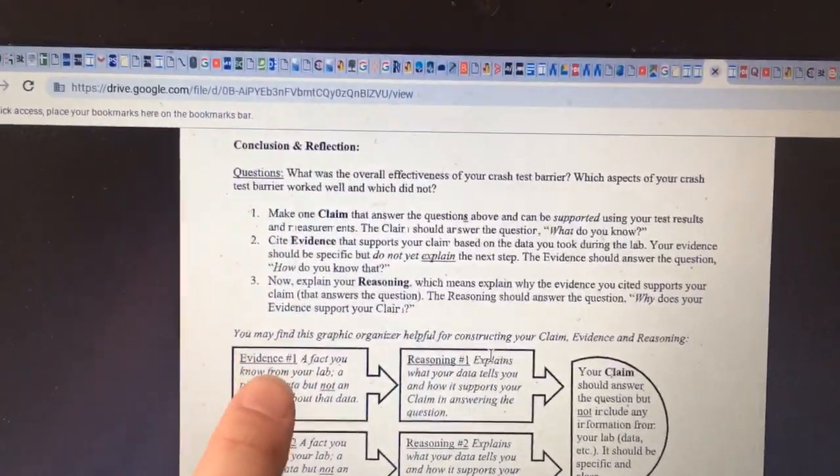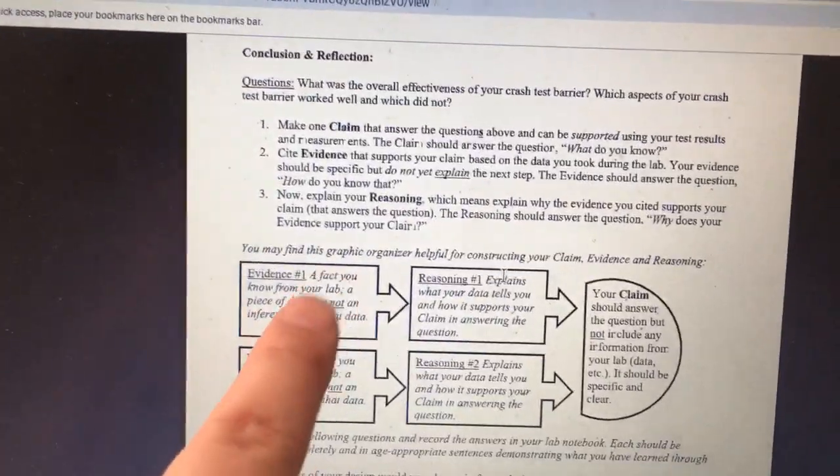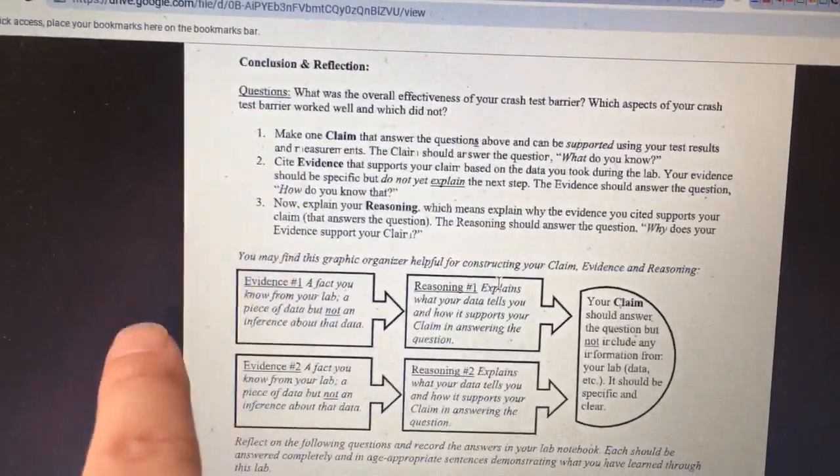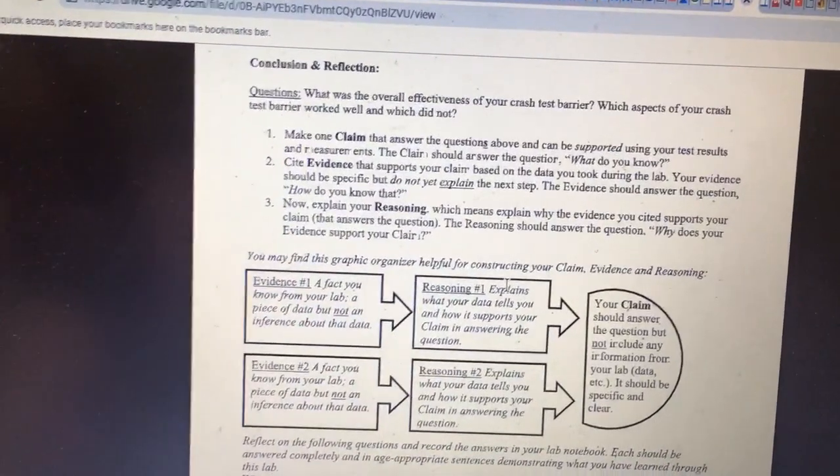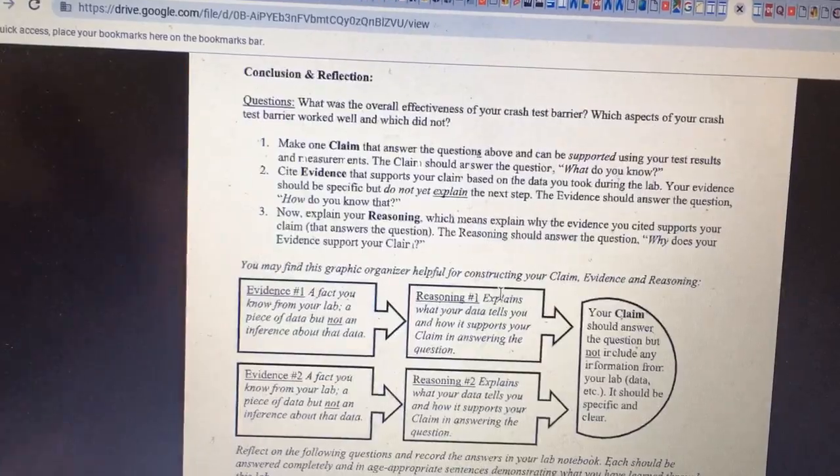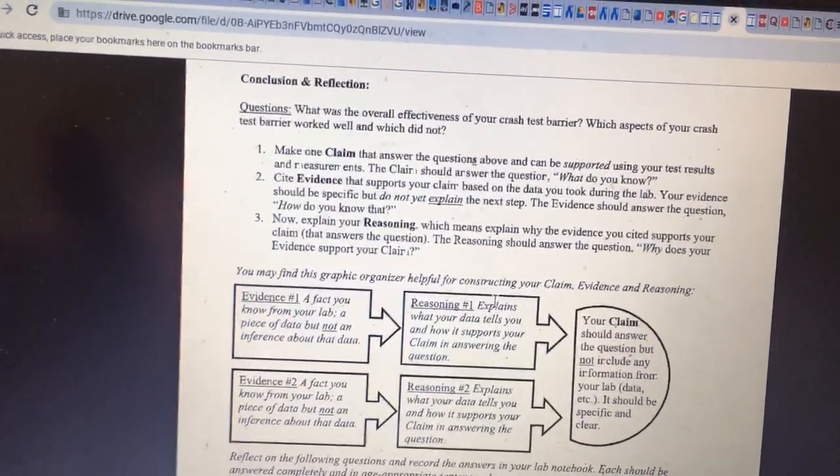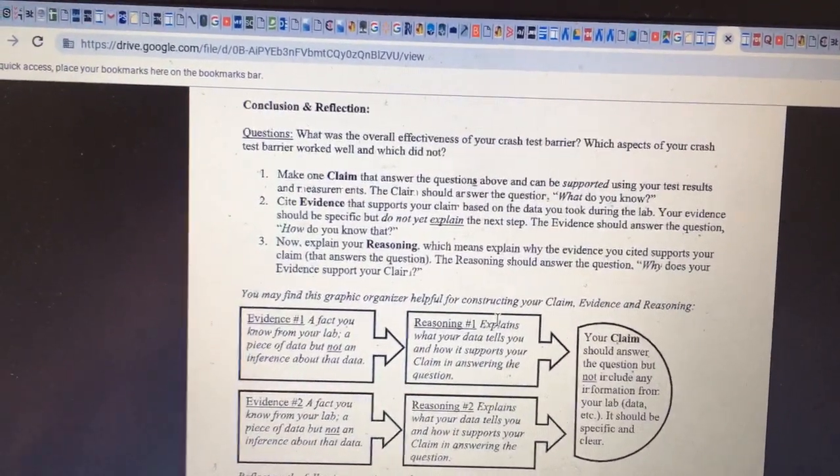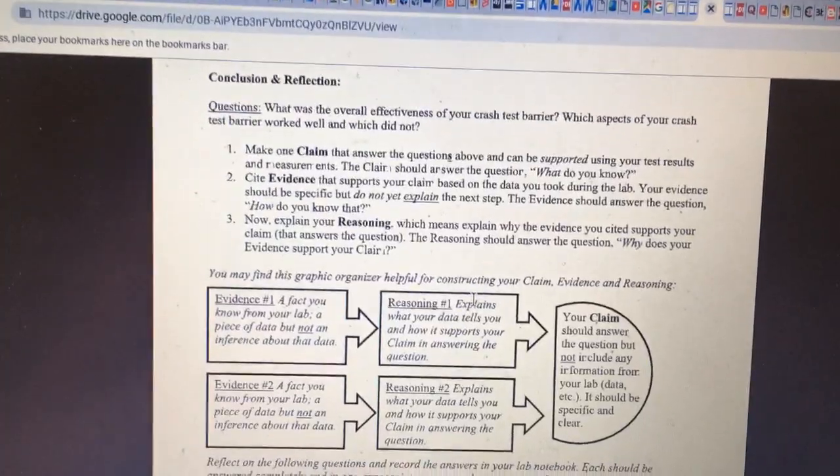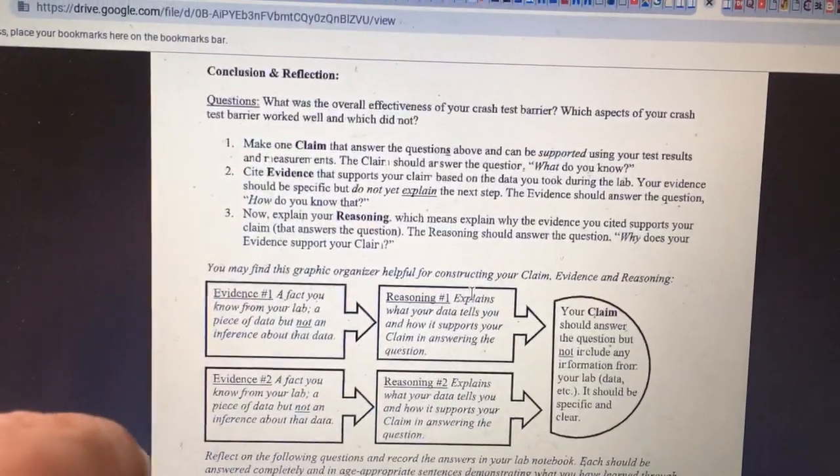So it goes like this: evidence, reasoning, claim. I'll give you an example from a lab that we did last semester. Last semester we did a penny drop lab where we dropped one penny, three pennies, and five pennies. And the goal was to figure out, do they all fall at the same rate, or do they fall at different rates? What you should have found is that all sets of pennies fall at the same rate, which then proves that everything feels the same acceleration, regardless of mass.